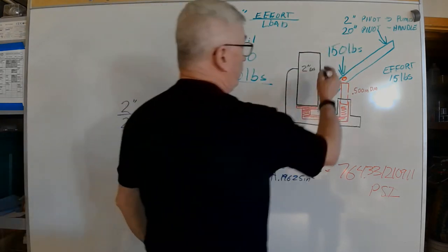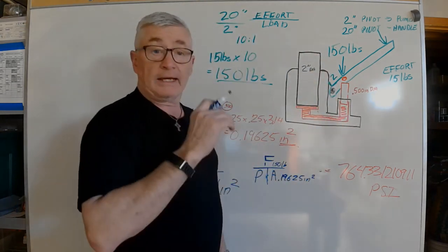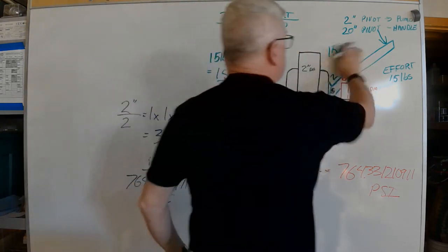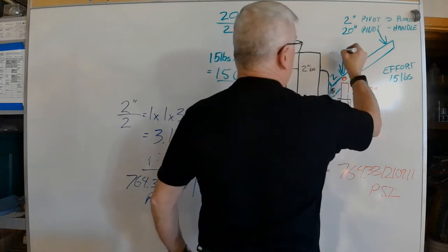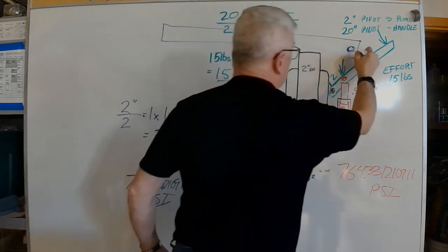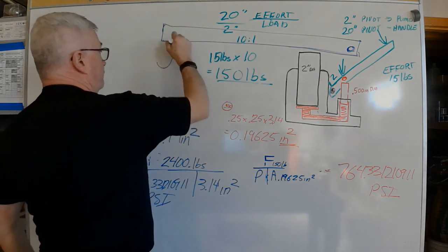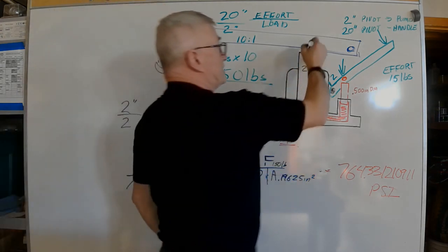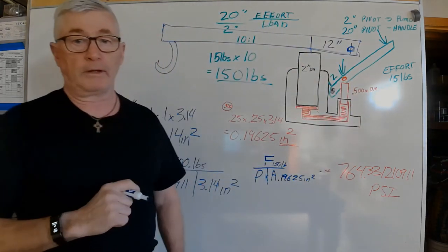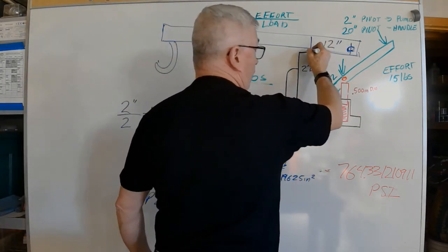Now what I'm going to do is add one more calculation. If this was on my engine crane, I need to figure out what the leverage advantage would be. If we put our pivot here and run our boom out like this, I'm going to say the distance from here to here is 12 inches. From the pivot to the effort is 12 inches, and from the pivot to the load out here is 60 inches.